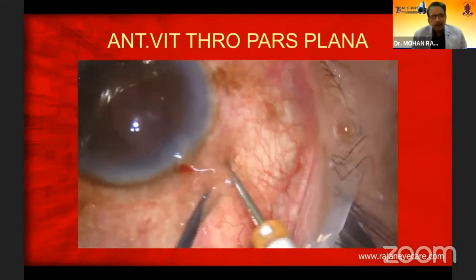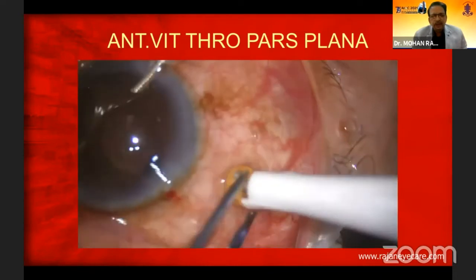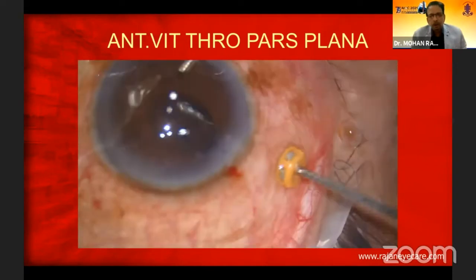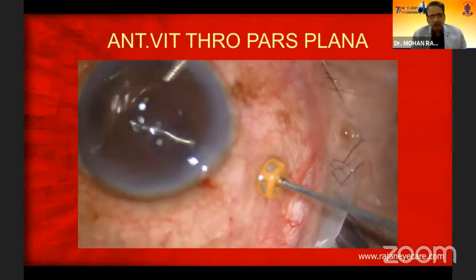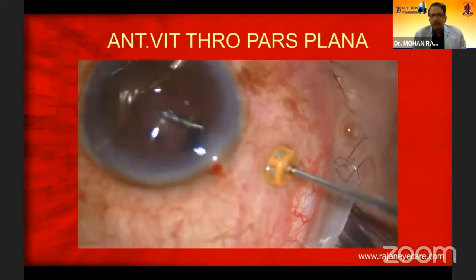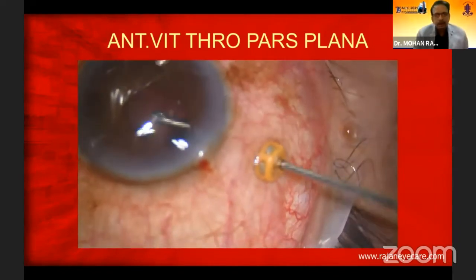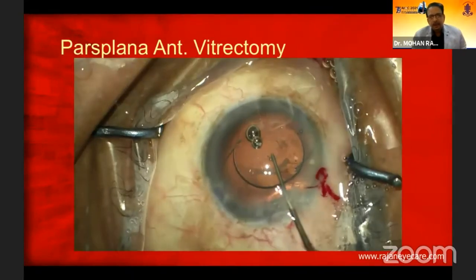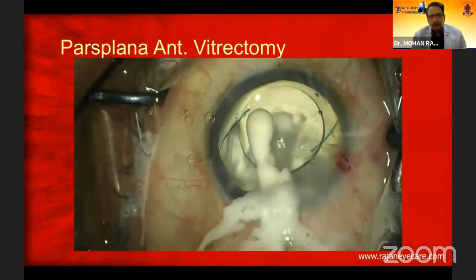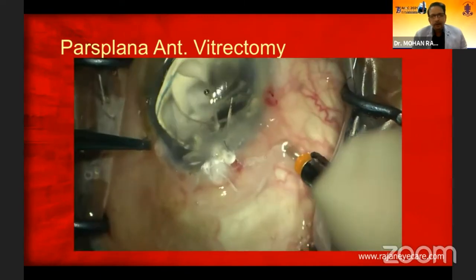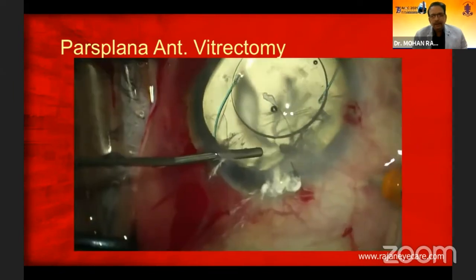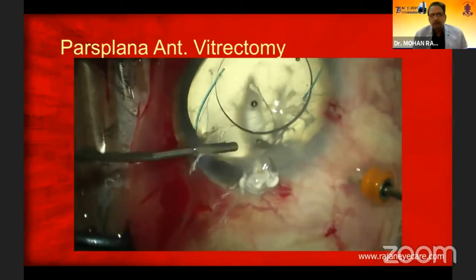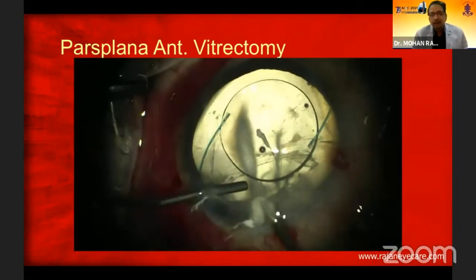Once I put a trocar and cannula, you can see how beautifully the vitreous in the anterior chamber comes off. That is a very, very important message. The trocar and cannula is not very difficult to put — just measure 3.5 mm from the limbus. If you don't have a trocar and cannula, you can always put a sclerotomy with a 20-gauge needle. I'm putting preservative-free triamcinolone diluted there, and putting a trocar and cannula into the vitreous cavity, giving an anterior chamber maintainer, and removing the vitreous from behind.